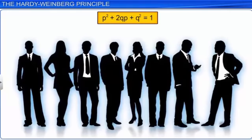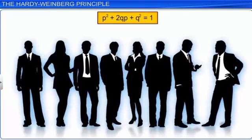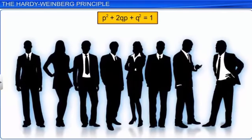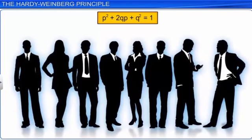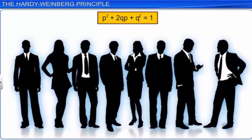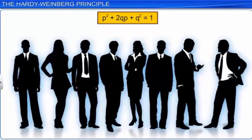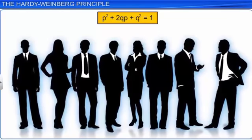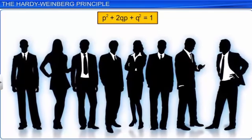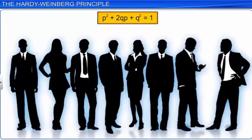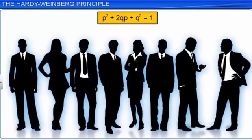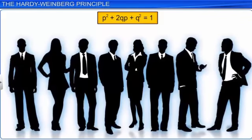Evolution is a slow and sophisticated process. The Hardy-Weinberg principle helps understand evolution as it provides a baseline to measure the genetic change in a population.